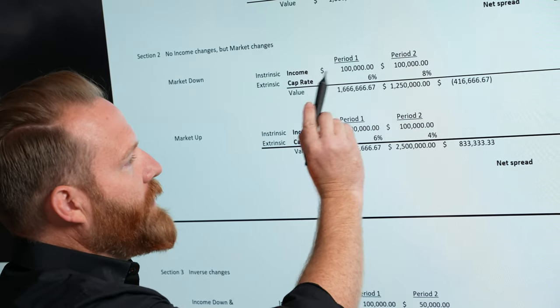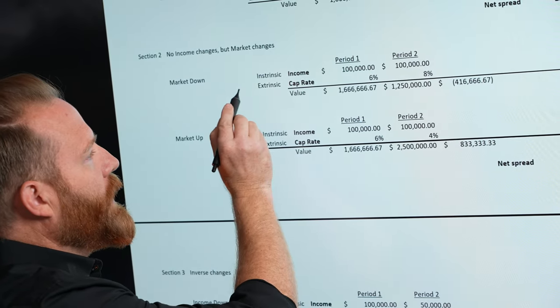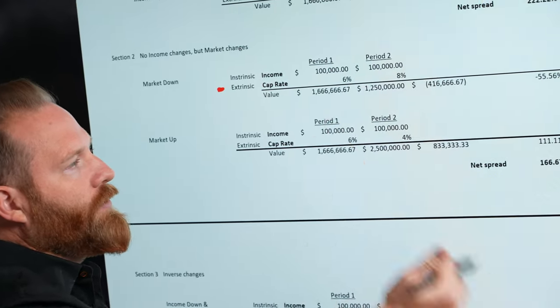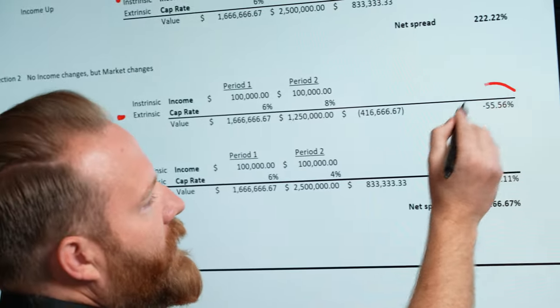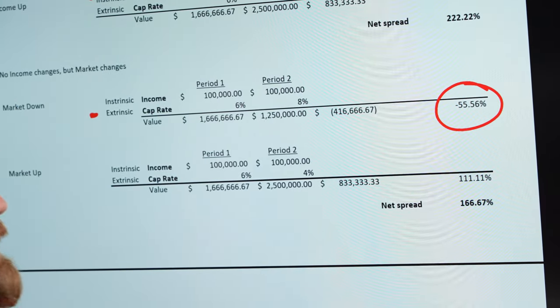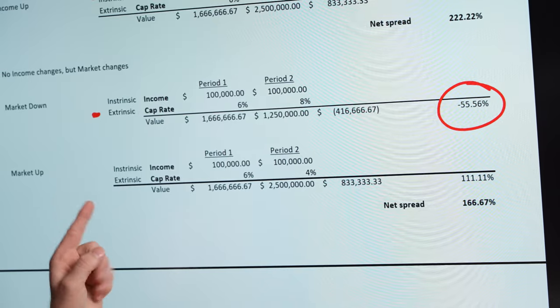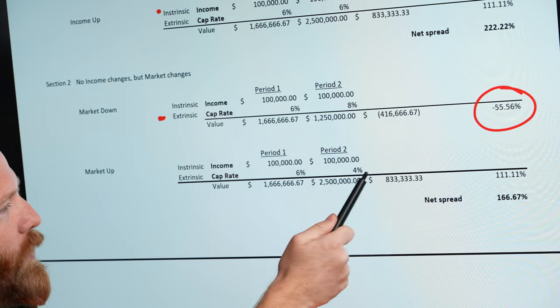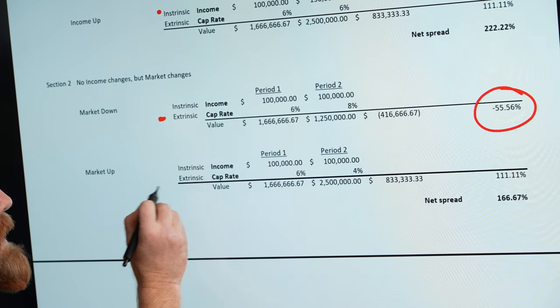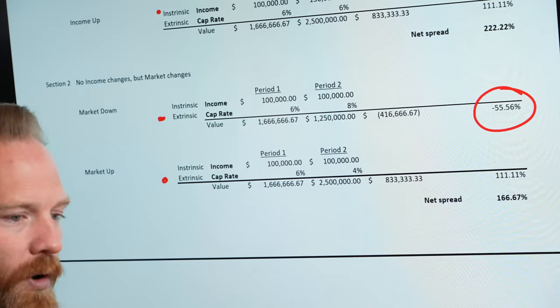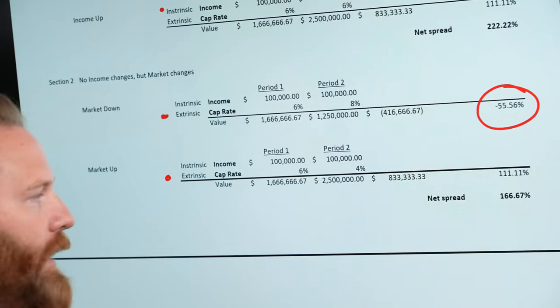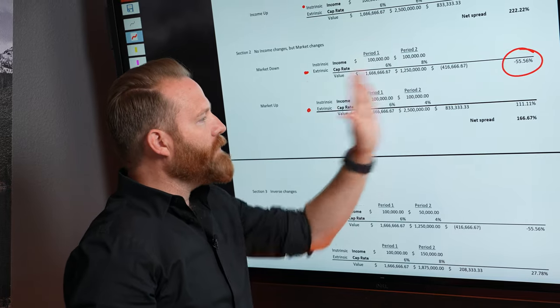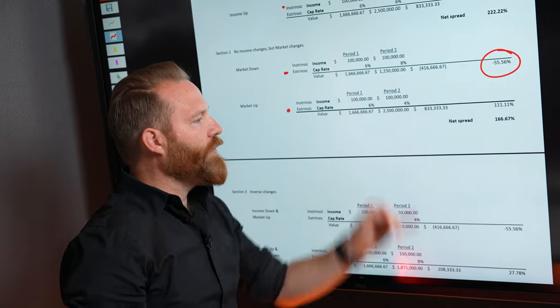So a 6 to an 8 meant the price went down. The income stayed the same year to year or period to period. So extrinsically, the market doesn't want to buy as much. So prices go down, cap rates go up. You have a negative 55% at a 6 to an 8 cap. All things being equal. The same with this one. Now inverse. All things being equal income, period one to period two. But extrinsic or that cap rate, more buyers come in. So prices go up, cap rates go down.